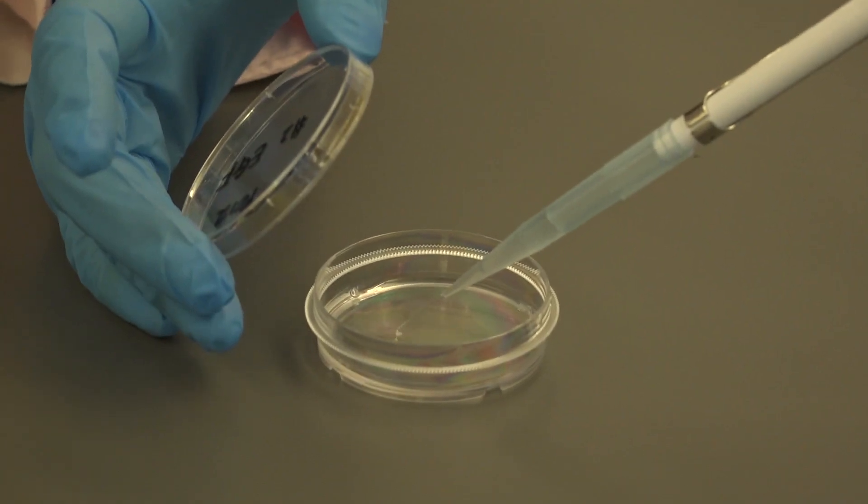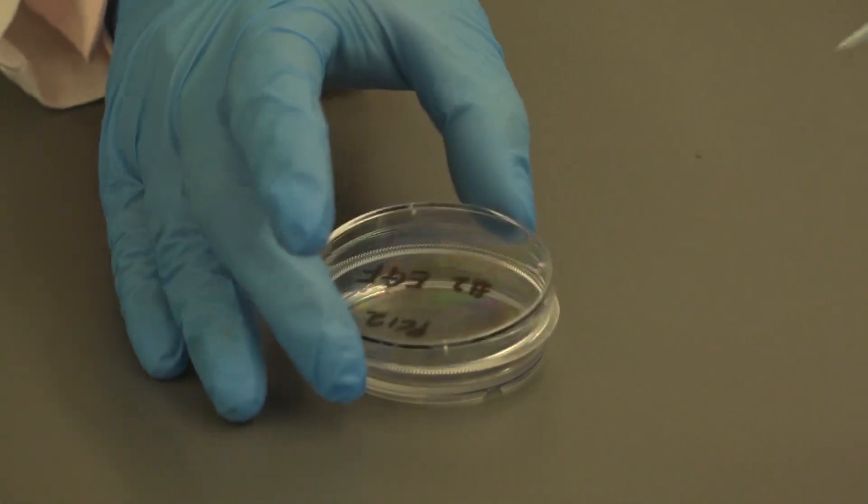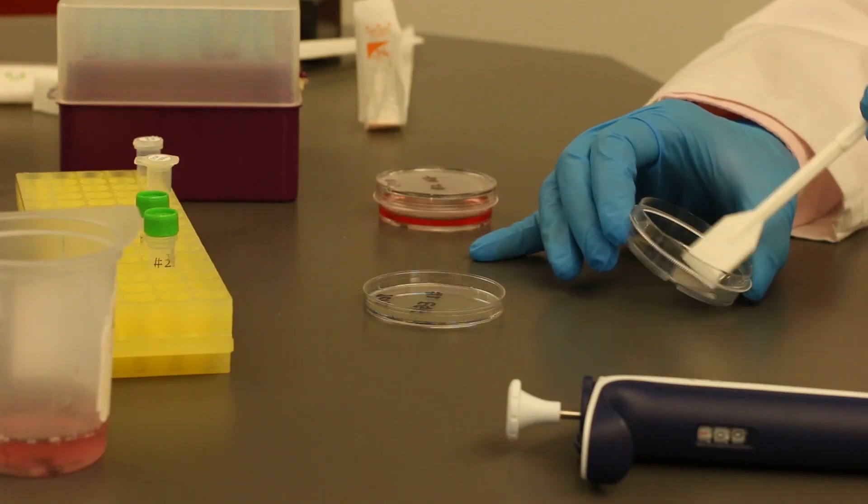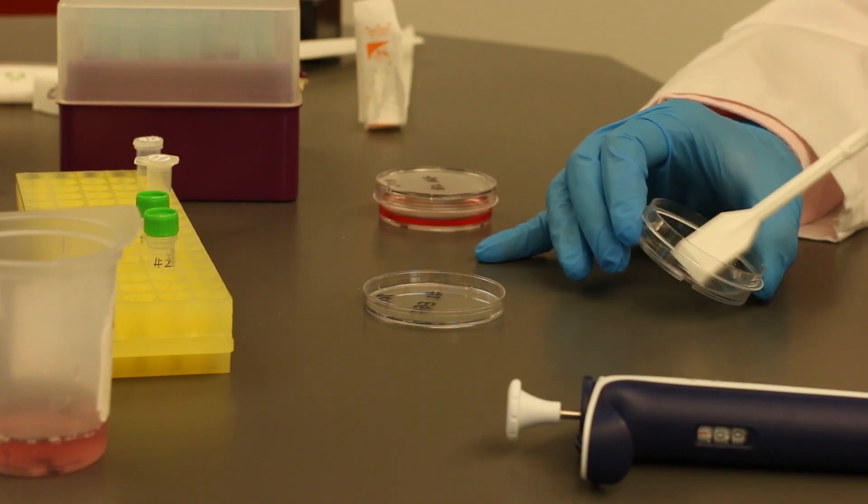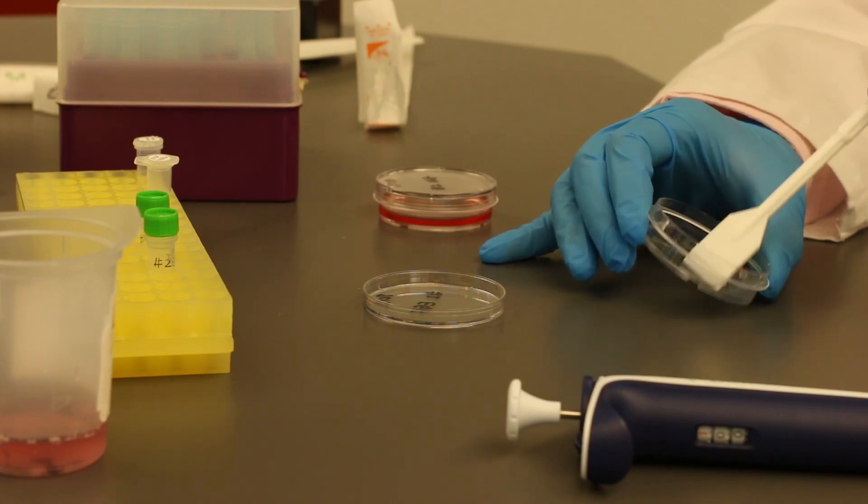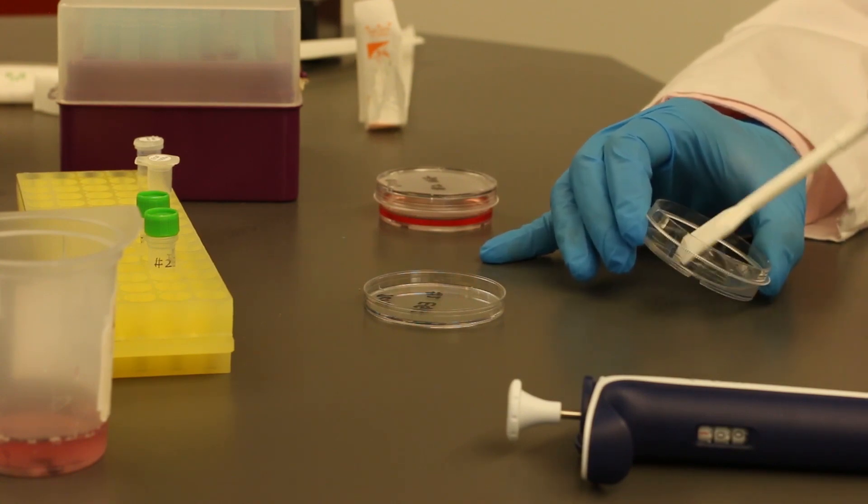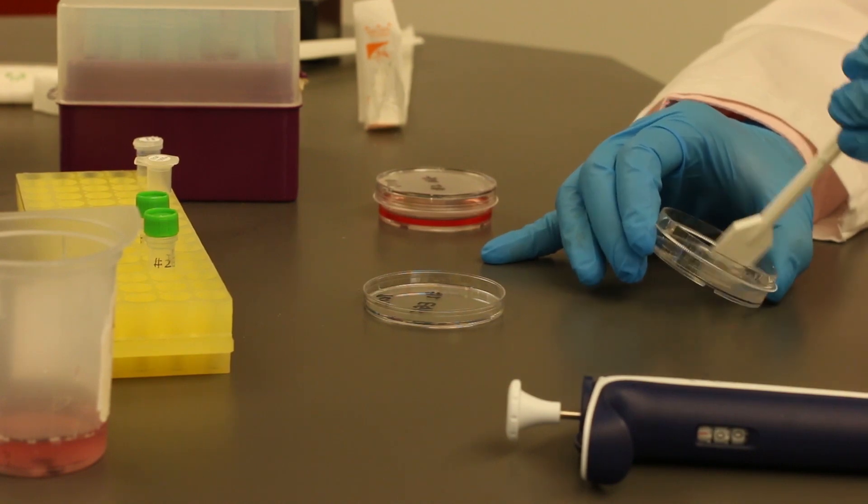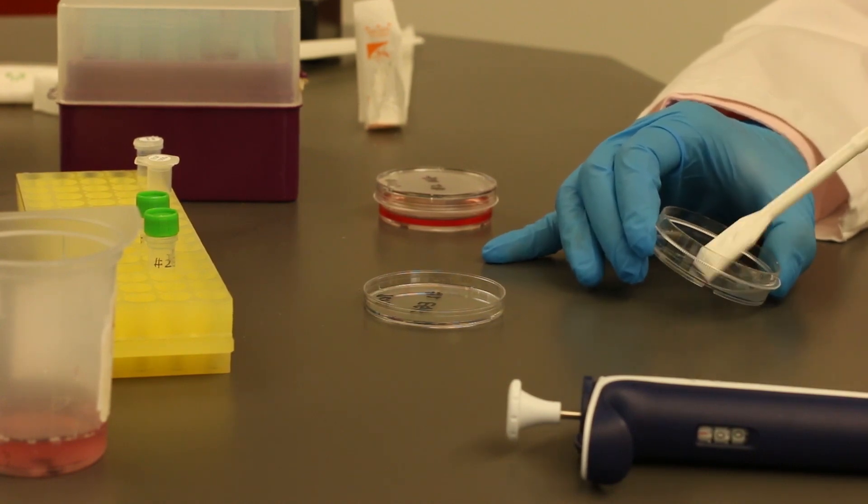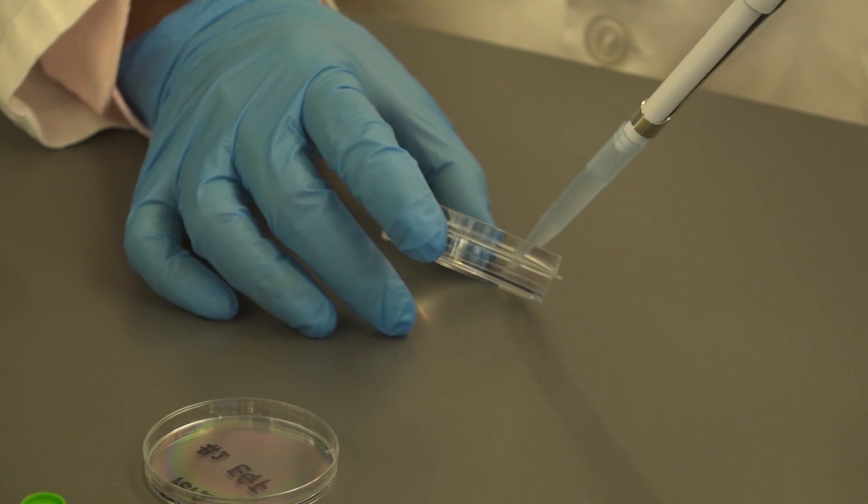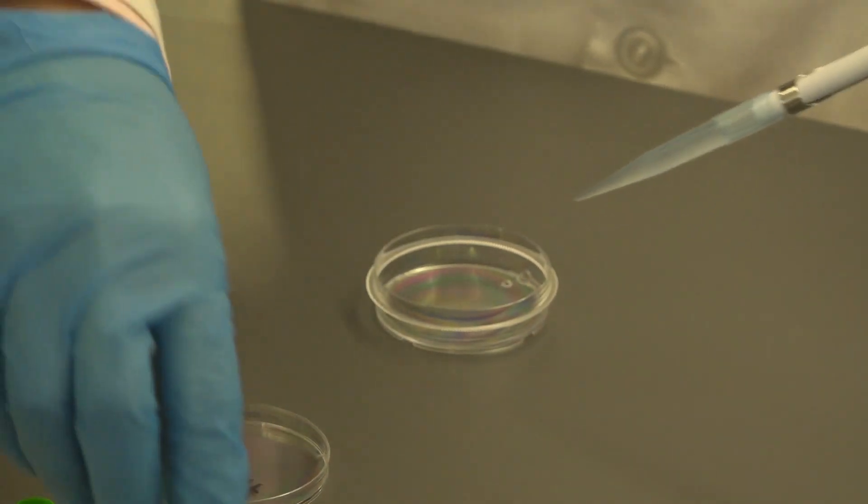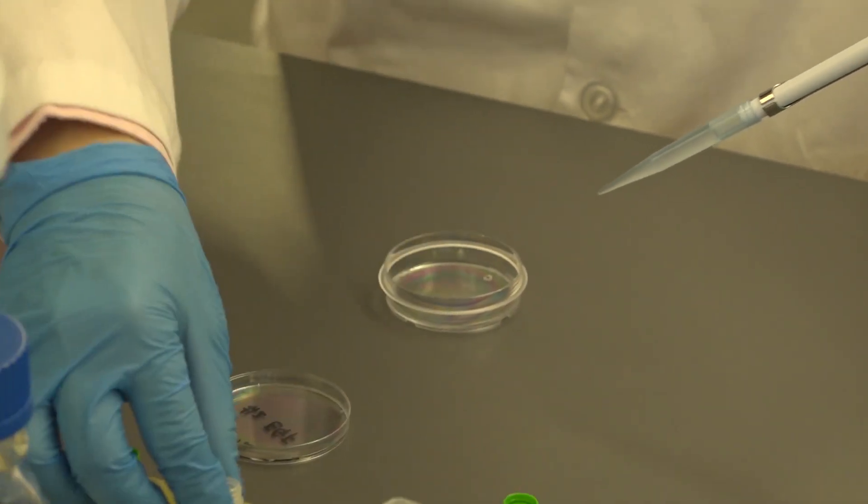Immediately pipette 1 milliliter of TBS into each dish and scrape off the cells using a sterile cell scraper. To make it easier to collect the cells, slightly tilt the dish and scrape all the cells into the bottom corner. And pipette all the cell suspensions into the pre-labeled 2-mil screw top tube.